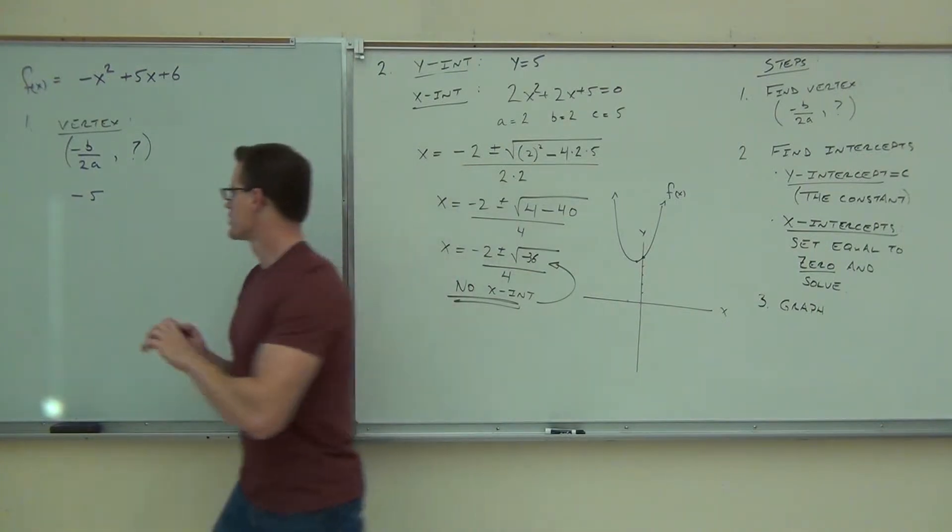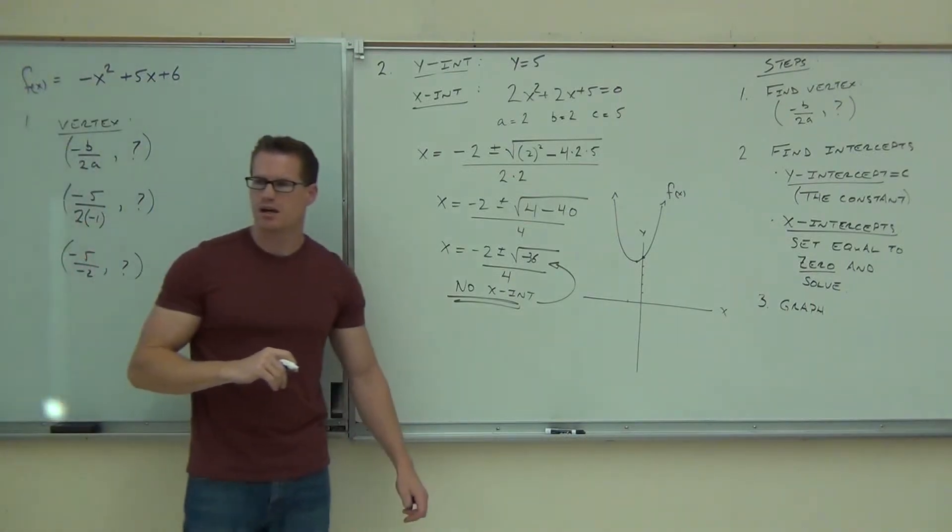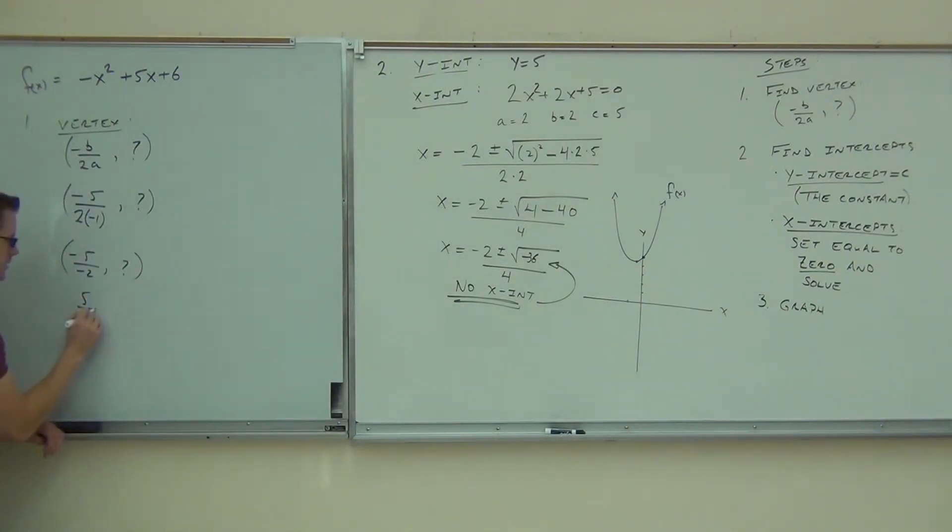When we plug this into our vertex, you should have negative five over two times negative one. Did you see that? Comma some question mark because we're not there yet. This is going to be negative five over negative two. How much is negative five over negative two? Positive five halves, comma question mark. Now what goes in here is what happens when you plug in five halves.